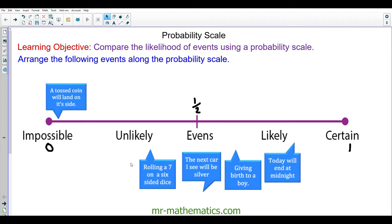Rolling a seven on a six-sided dice. Well, out of the numbers on the dice which are one, two, three, four, five, and six, zero of them are seven. So zero chances out of six is zero. So this event would be impossible.